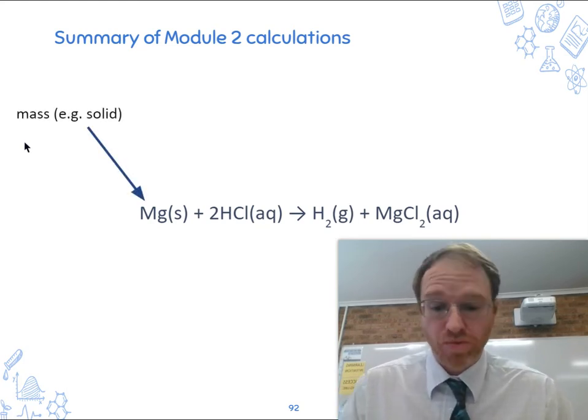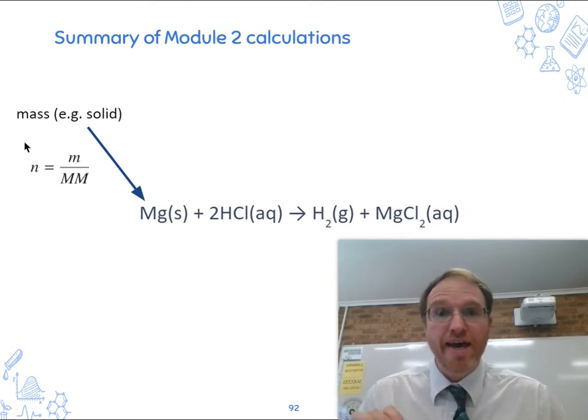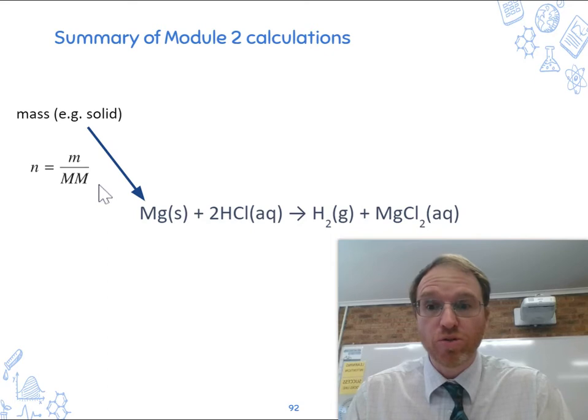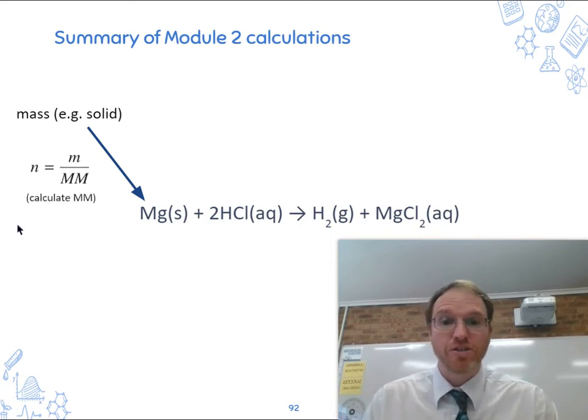So if they give you a mass, what do we do? Number of moles is mass over molar mass. There's the first calculation and to do that you need to be able to work out the molar mass of a substance. So there's another calculation you need.